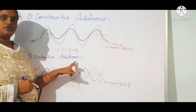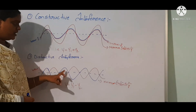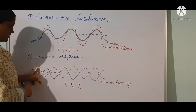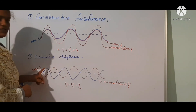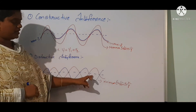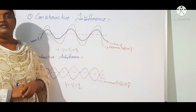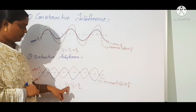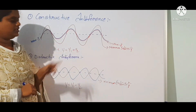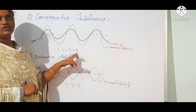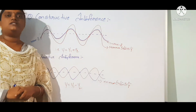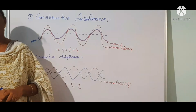In destructive interference, wave 1 and wave 2 propagate in opposite directions. This results in less intensity, and a dark fringe is formed. The resultant displacement is y = y1 − y2. So, constructive interference produces maximum intensity with y = y1 + y2, while destructive interference produces minimum intensity with y = y1 − y2. This is the basic idea about interference of light.